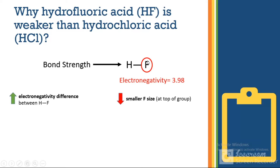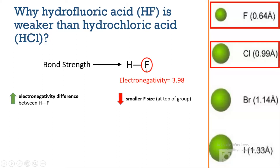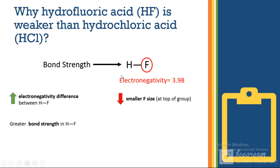Fluorine is at the top of the halogen group and is smaller in size than chlorine. Being smaller, it has greater orbital compatibility with hydrogen when forming bonds. Because of the higher electronegativity difference and smaller fluorine size, the bond strength in hydrogen fluoride is greater than in hydrochloric acid. This strong bond makes hydrofluoric acid less likely to donate a proton — it will not readily dissociate — making it a weaker acid than hydrochloric acid.